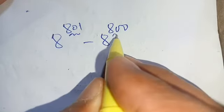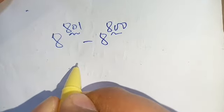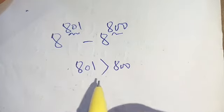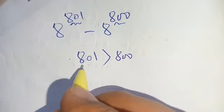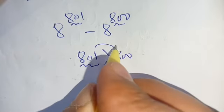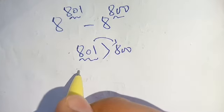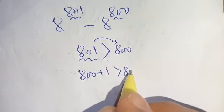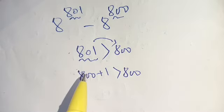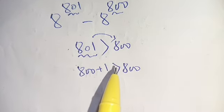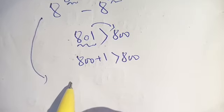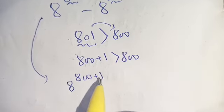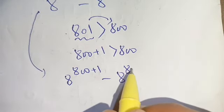Let us take this power 801 and 800. We see that 801 and 800, 801 is greater than 800. We write down 801 in terms of 800, which means that 801 can be broken down as 800 plus 1. Now, in place of 801, we substitute 800 plus 1, and our equation will become 8 power 800 plus 1 minus 8 power 800.